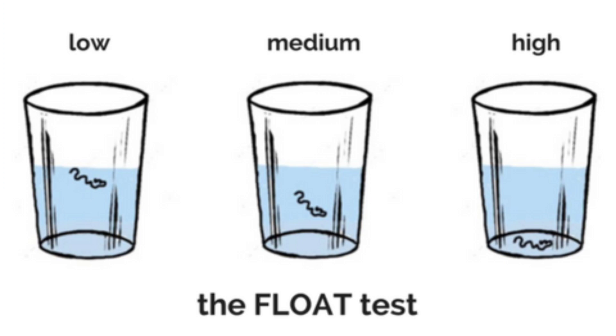So first of all, what are the three different types of porosity? The three types are high porosity, low porosity, and medium porosity. Before we talk about the different types, let's talk about what porosity is on its own. Porosity is your hair's ability to absorb moisture and products and retain them in the hair.